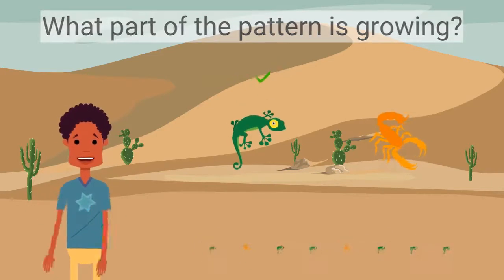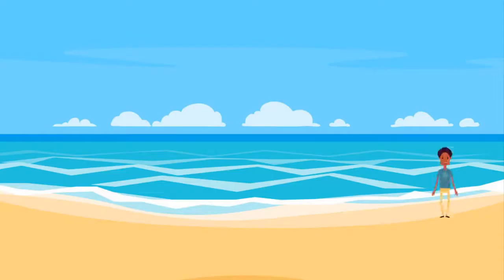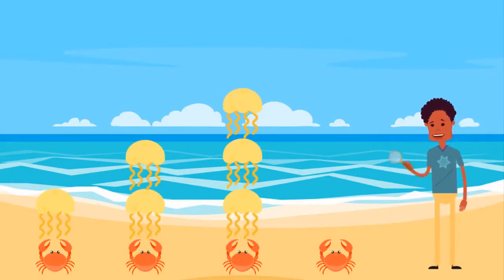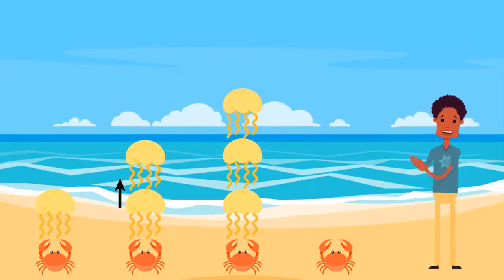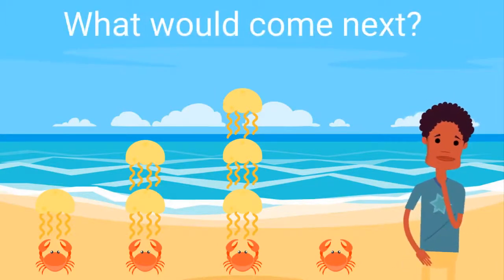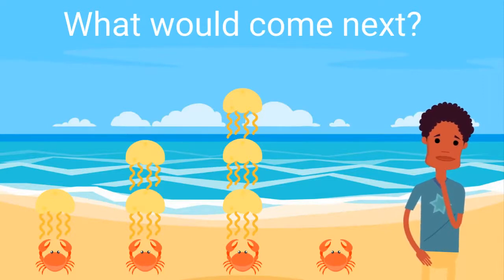Let's look at another example of a growing pattern. Here we are at the beach. Look at this growing pattern — this pattern is getting taller as it grows. We have a crab with one jellyfish on top. The next crab has two jellyfish on top. The pattern continues and the crab has three jellyfish on top.